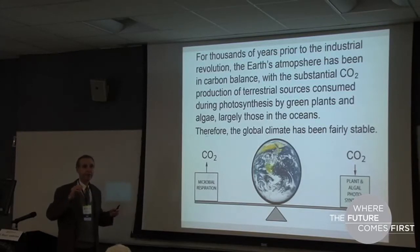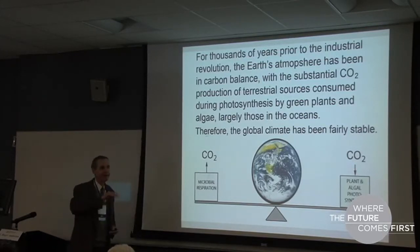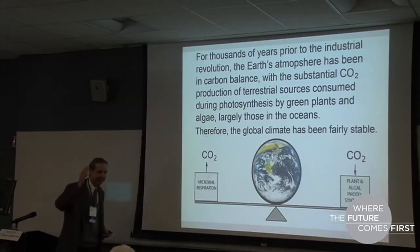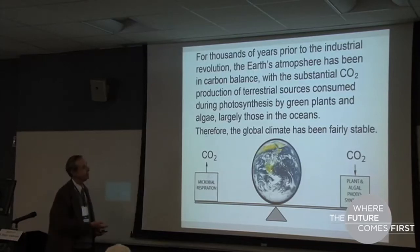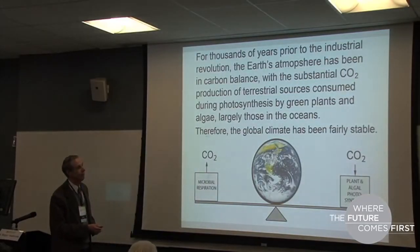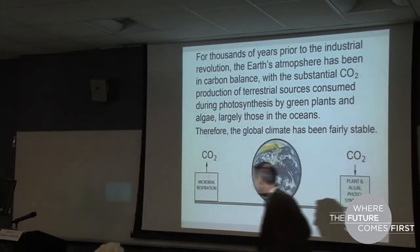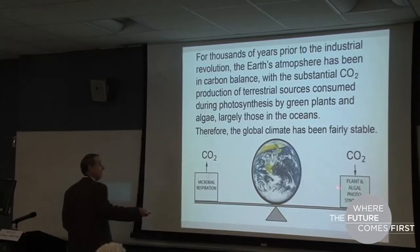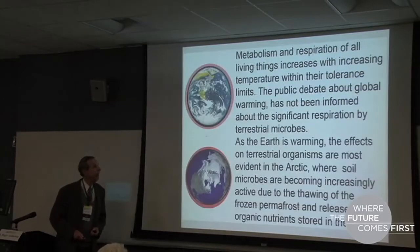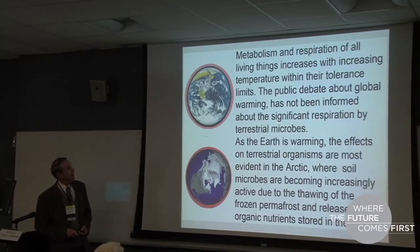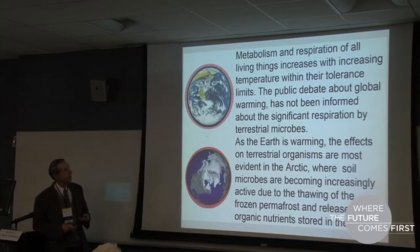Fundamentally, what happened is we shifted the balance—putting out more CO2 than the planet has normally experienced. As the Earth is warming, the effects on terrestrial organisms are most evident in places such as the Arctic and the poles. For hundreds of thousands of years, the polar Arctic has been going through a normal cycle with very long deep winters and some brief summertime. The small plants and mosses there have been developing huge layers of organic matter in what they call the permafrost.